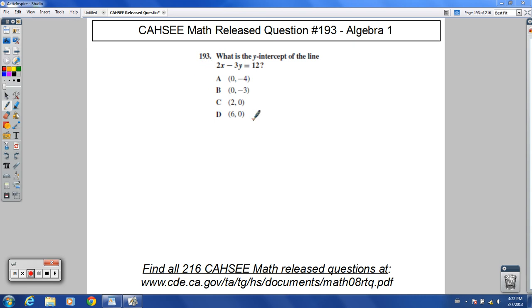Welcome to release question 193, CAHSEE Math. It says, what is the y-intercept of the line 2x minus 3y equals 12?